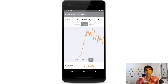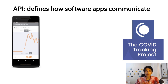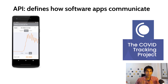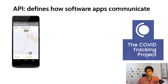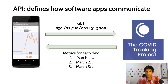Our goal in this video is to talk to the COVID Tracking Project API in order to retrieve the data that we need for our application. The way we'll go about doing this is by using the API created by the COVID Tracking Project. Our phone or our application is the client, and we're going to be making a request to the COVID Tracking Project and getting a response which contains the data.